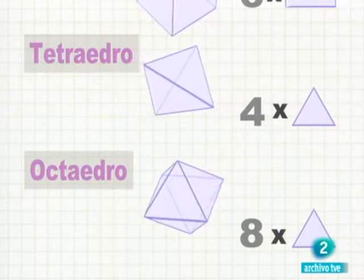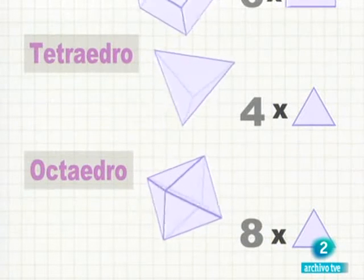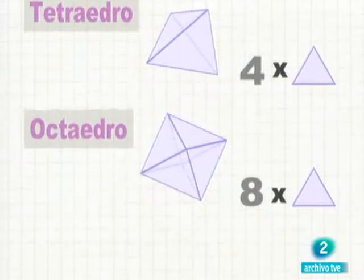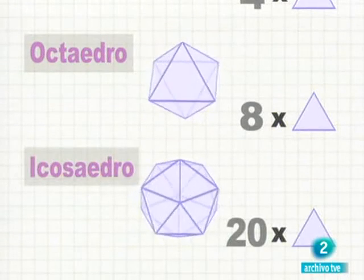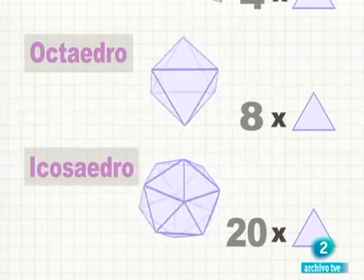Este otro tiene cuatro caras triangulares y se llama tetraedro. El número de caras de este otro es ocho. Es un octaedro.